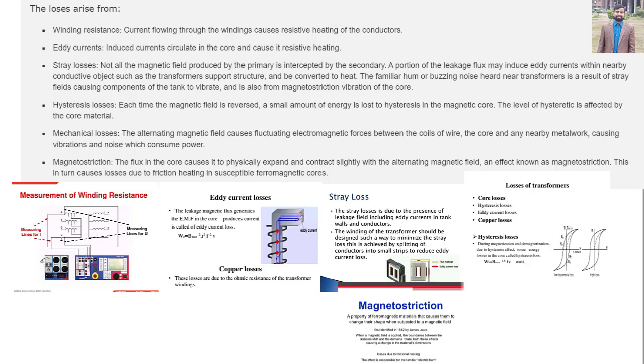Hysteresis losses: each time the magnetic field is reversed, a small amount of energy is lost to hysteresis in the magnetic core. The level of hysteresis is affected by the core material. Mechanical losses: